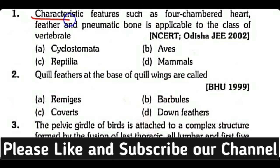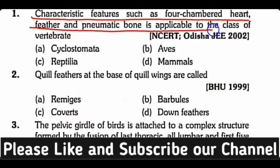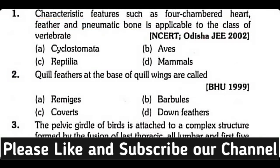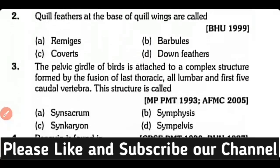Question 1. Characteristic features such as four-chambered heart, presence of feathers, and pneumatic bones are applicable to which class of vertebrate? Options: Cyclostomata, Aves, Reptilia, Mammal. Correct answer is option B. Class Aves contains a four-chambered heart, feathers, and pneumatic bones.